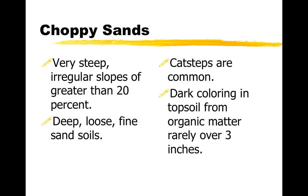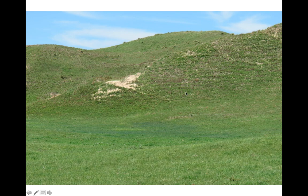Choppy Sands is our third site with a lot of sand. These are very steep hills with lots of slope — greater than 20% slope. It'll be really loose and pure sand with very little organic matter, less than three inches usually. These will have cat steps on them, so it'll be choppy, very steep, choppy hills. Here's a picture of that.